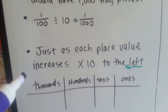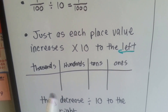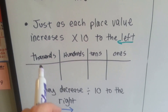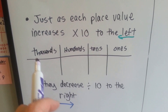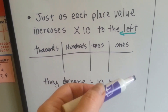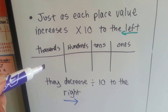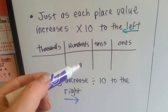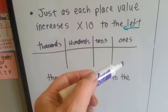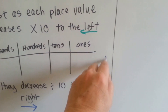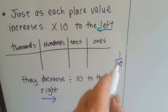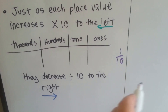Just as each place value increases times ten going to the left — one times ten is ten, ten times ten is a hundred, a hundred times ten is a thousand — it decreases as we divide by ten going to the right. A thousand divided by ten is a hundred, a hundred divided by ten is ten, ten divided by ten is one, one divided by ten is a tenth, one-tenth divided by ten is a hundredth, one-hundredth divided by ten is one-thousandth.